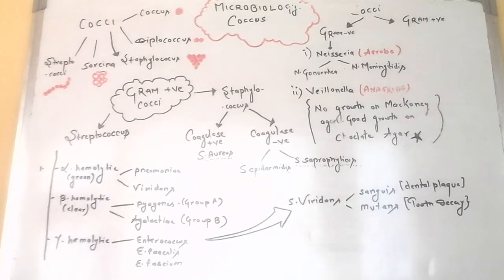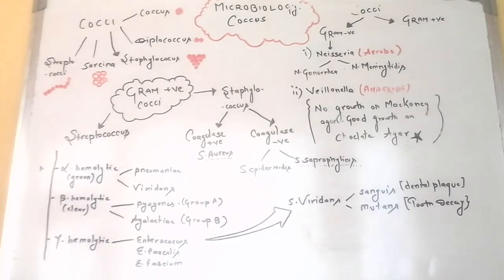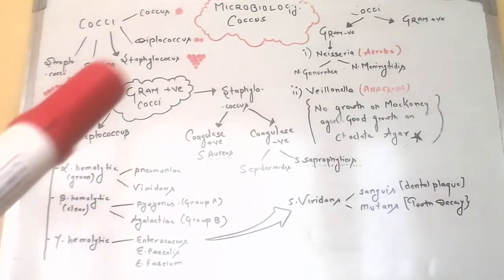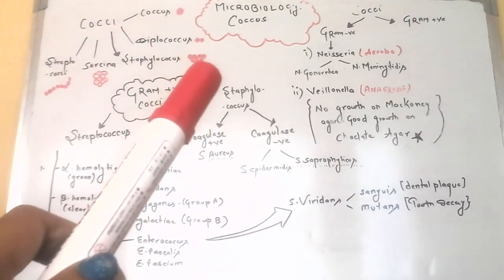There are three basic shapes of bacteria: spherical shape, rod shape, and spiral shape. Spiral shape bacteria can further be categorized based on the amount of spiraling they show. Cocci are round, spherical-shaped bacteria. They can occur as single bacteria or be arranged in a pair, chain, or cluster depending on the type. If simply present, it is known as coccus; the combination of two bacteria is diplococcus.